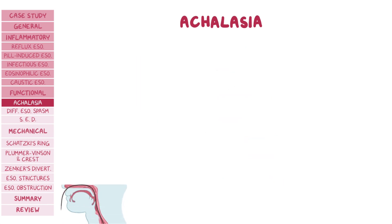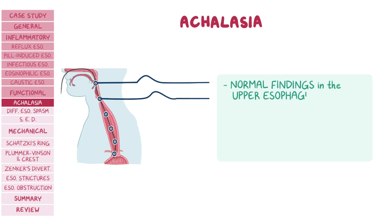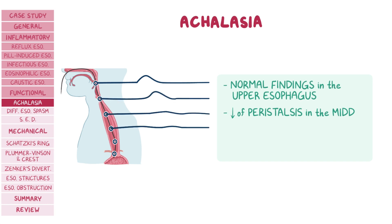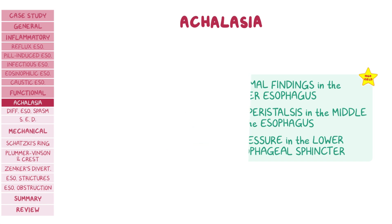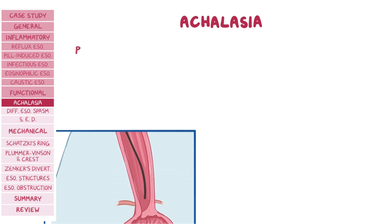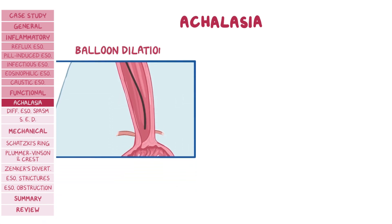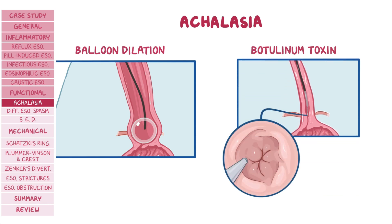For your exam, individuals with achalasia have normal findings in the upper part of the esophagus, decreased or absent peristalsis in the middle part of the esophagus, and high pressure in the lower esophageal sphincter. For treatment, the obstruction can be corrected with balloon dilation, or the increased tone can be managed with local injection of botulinum toxin.